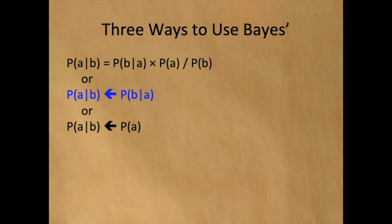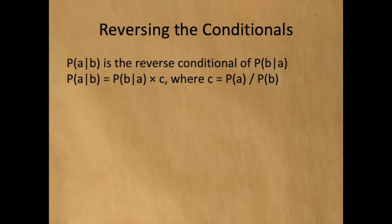The second way to use Bayes' law is to reverse conditional probabilities. We could consider it as a function that converts the probability of B given A into the probability of A given B. We could think of this as reversing the conditionals, or even as a form of time travel. The probability of A given B is the reverse of the probability of B given A. In this case, we're multiplying it by a constant C, where C is the probability of A divided by the probability of B.